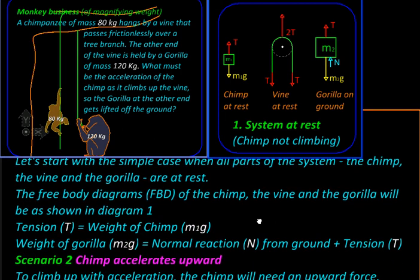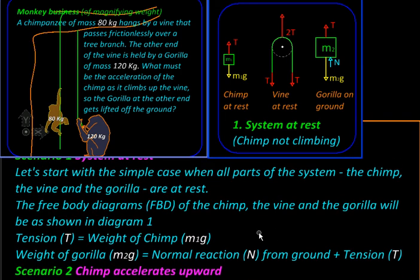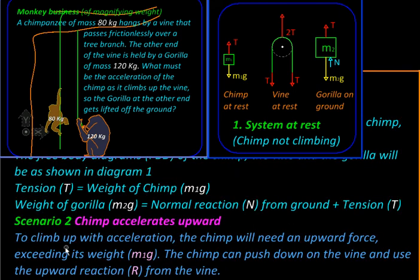Now let us consider a scenario when the chimp starts to accelerate upward. To climb up with acceleration, the chimp will need an upward force and this must exceed its weight m1g. The chimp can push down on the vine and use the upward reaction R from the vine.